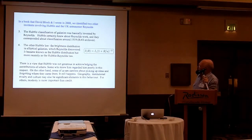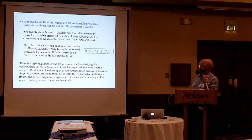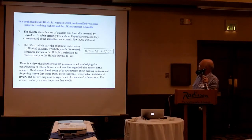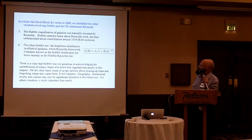Reynolds basically invented what is now called the Hubble Classification of Galaxies. Hubble certainly knew about Reynolds' work, and the two corresponded about classification around 1919. The other Hubble law — not the expansion of the universe, but the light distribution of elliptical galaxies — Reynolds discovered several years before Hubble worked on it. It became known as the Hubble Distribution, but more recently people have recognized that Reynolds did it first, and it's now known as the Hubble-Reynolds law.